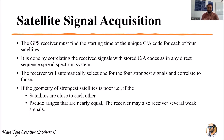We have already seen the concept called C/A code or the P codes with respect to GPS receivers and satellite communications. The GPS receiver must find the starting time of the unique C/A code of each of the four satellites.